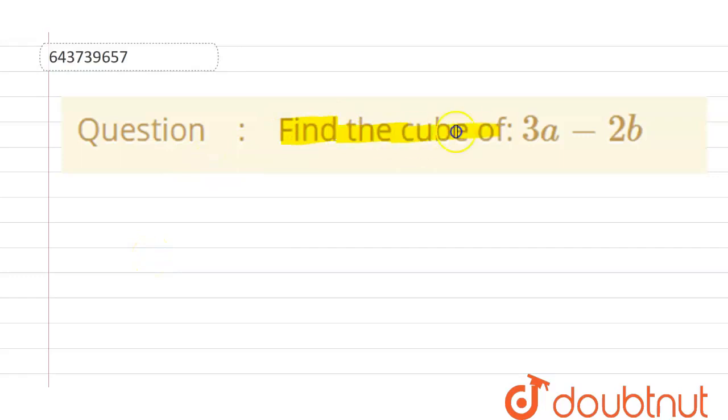We have the question in which we have to find the cube of 3a minus 2b. So now we can start with the given question: (3a - 2b) whole cube. First of all, we should know the formula: (x + y)³ = x³ + y³ + 3x²y + 3xy².